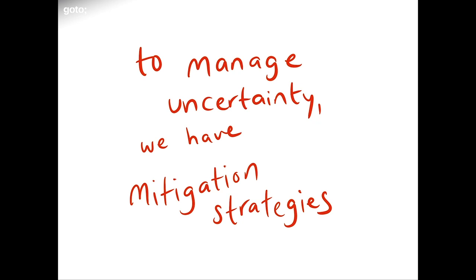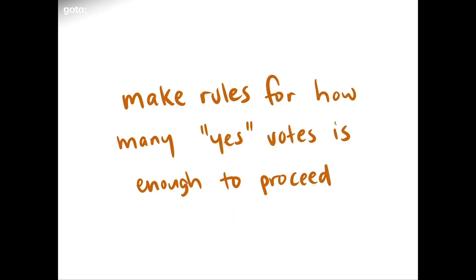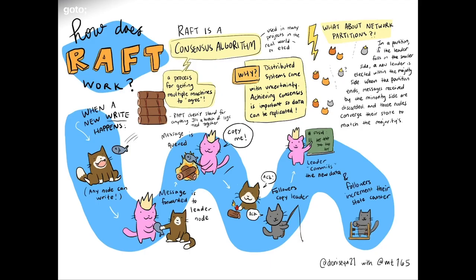We've developed some mitigation strategies to work around this limitation. One set is making rules for how many 'yes' votes is enough to proceed, rather than waiting for 100% quorum — because 100% will sometimes be an endlessly blocking operation. These rule sets are generally summarized as consensus algorithms. Raft is one of many two-phase commit strategies that try to keep a simple majority of nodes in agreement about the latest data to write, then fan out to all clients. Fun fact: Raft doesn't stand for anything — it's called that because it is a bunch of logs.